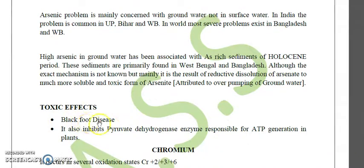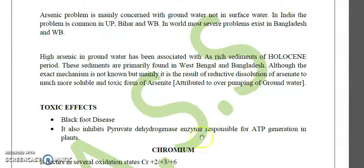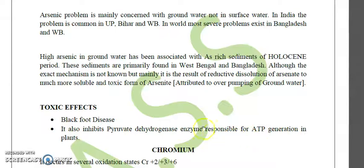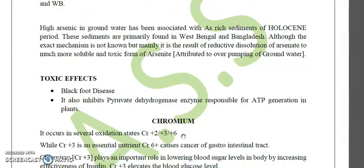The disease caused by As³⁺ toxicity is blackfoot disease. As³⁺ also inhibits the important enzyme pyruvate dehydrogenase, a key enzyme of the glycolysis pathway that converts glucose into pyruvate and further into acetyl-CoA, then into ATP through the citric acid cycle. If pyruvate dehydrogenase is inhibited, there will be no ATP production.